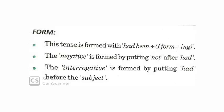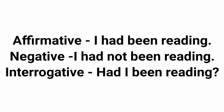Now this tense has a very easy form: you use 'had been' plus the first form of a verb plus '-ing'. Like, 'I had been reading.' For the negative, put 'not' after 'had' — 'I had not been reading.'